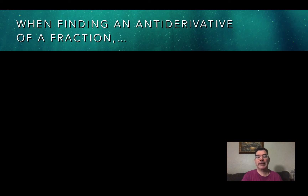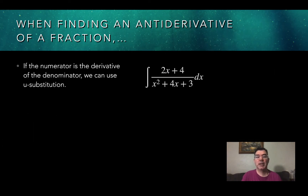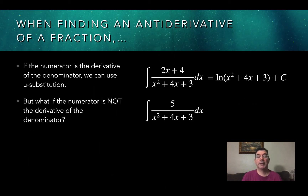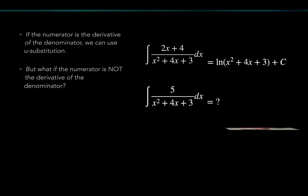Sometimes when finding the antiderivative of a fraction, the numerator is the derivative of the denominator, which means you can just use u-substitution. But sometimes the numerator is not the derivative of the denominator — it's not even a multiple of it. It's something entirely different, so we need a strategy to find the antiderivative of that expression.